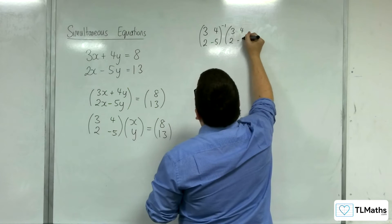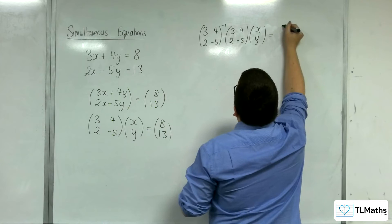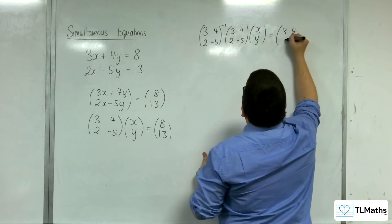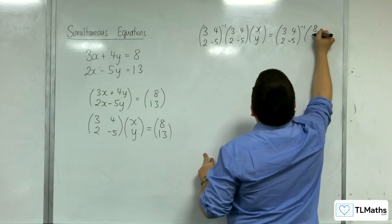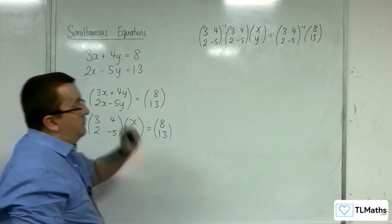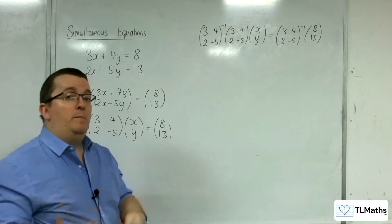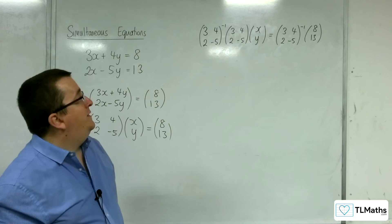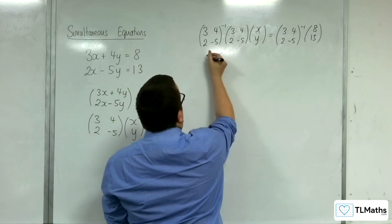So we're going to apply the inverse matrix to the left-hand side. So 3, 4, 2, negative 5, x, y. And we're going to apply it to the right-hand side as well. Now, on the left-hand side, conveniently, we've got a matrix multiplied by its inverse. We know that's going to be the identity matrix. So this is identity matrix. So we're just left with the x, y.